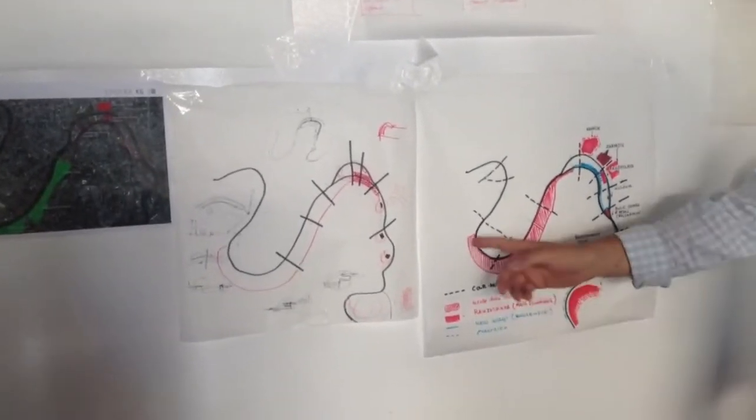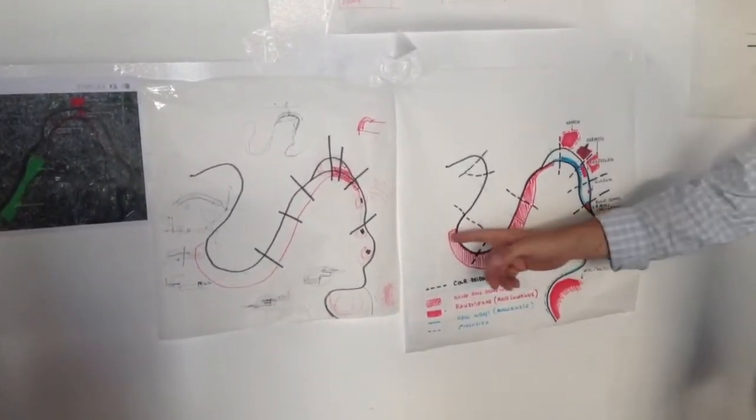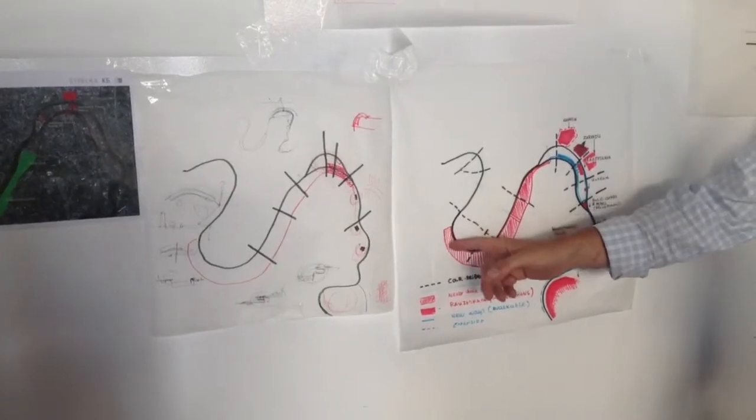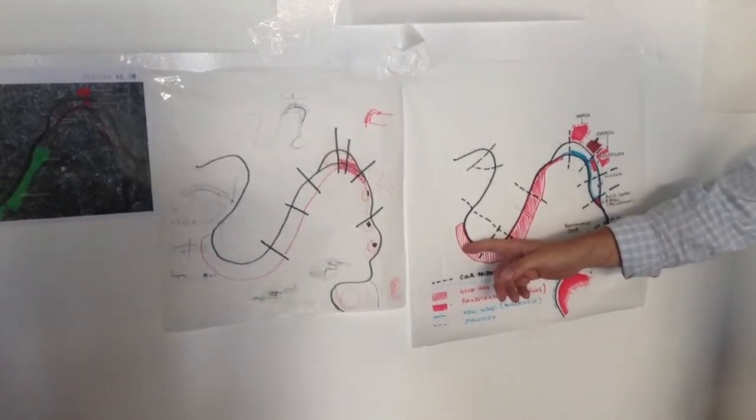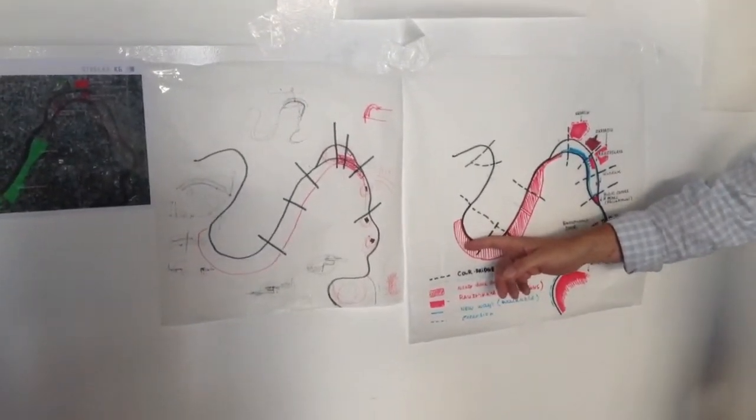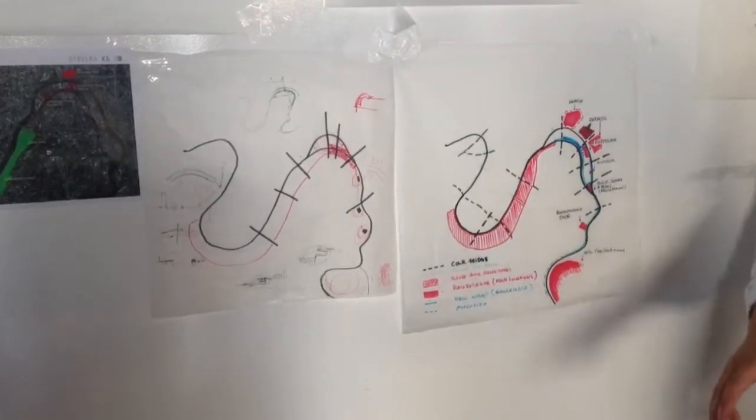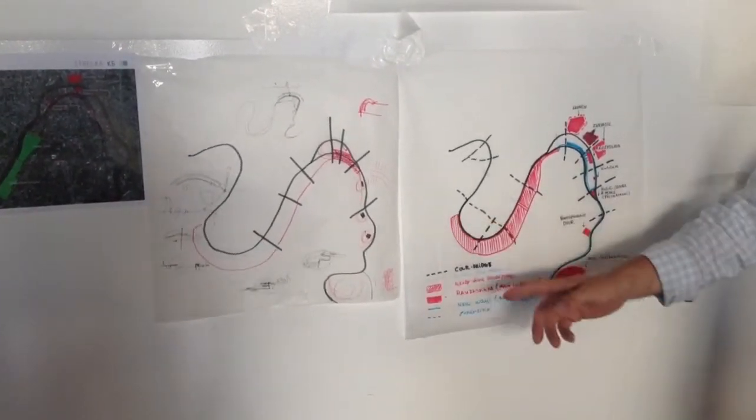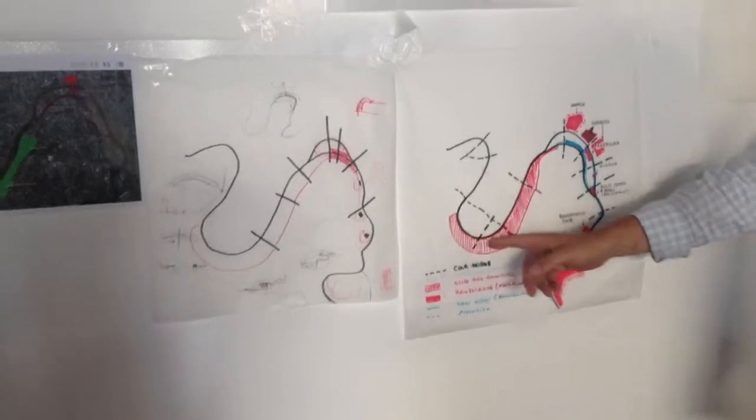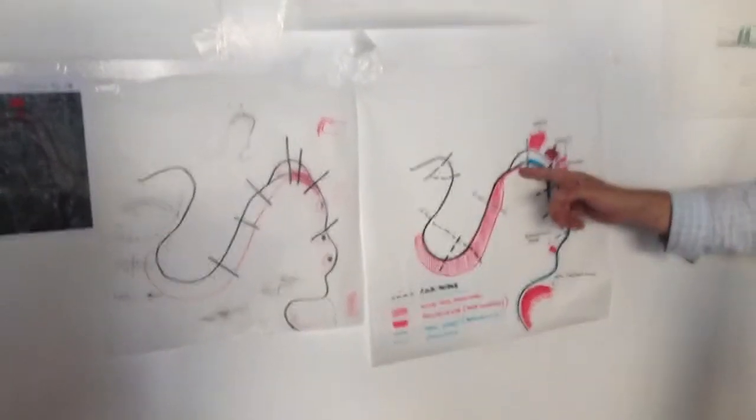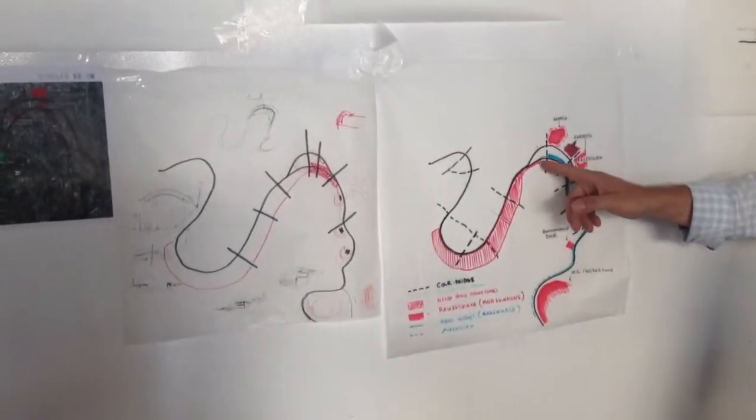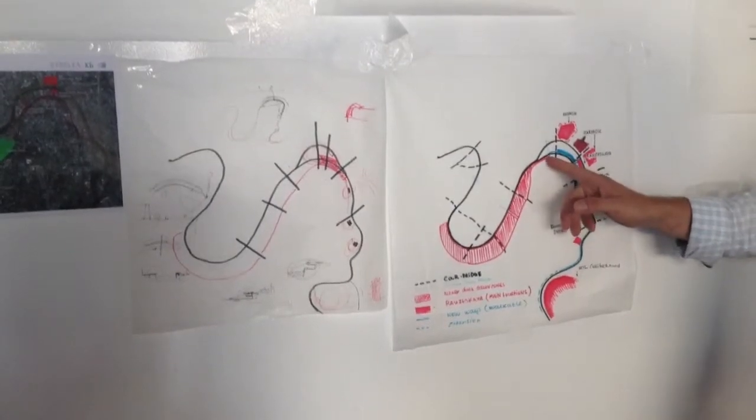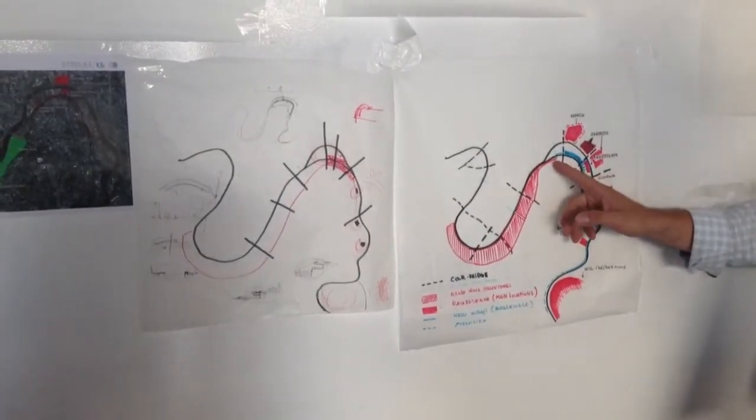So basically we can start from that park zone that we already have, like the green zones that are already constructed where people can walk and cycle. It goes like this to that point where basically we are now. It's a middle point, like the last point now is just in front of across the river.